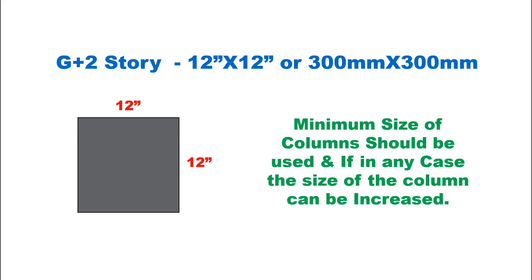For G plus 2, that is three storey house construction, the minimum size of the column should be 12 inch by 12 inch, that is 300 mm by 300 mm. In any case the column size can also be increased. In G plus 2 storey, the column size in the second floor can be decreased by increasing the size of the column in the ground floor and first floor.